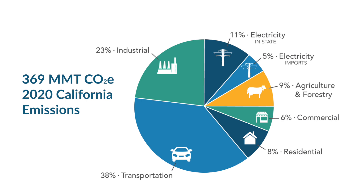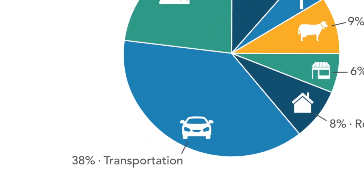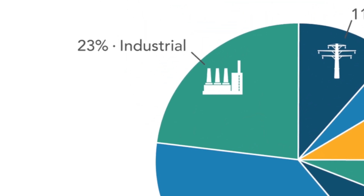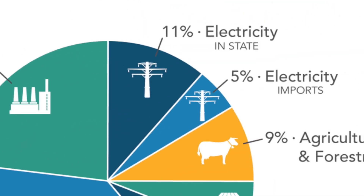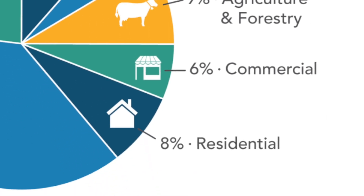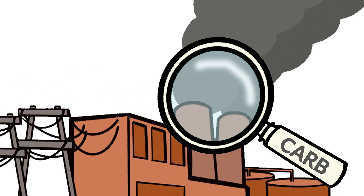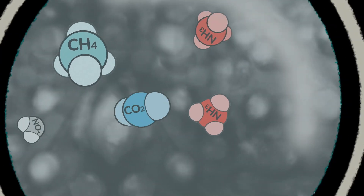CARB's California Greenhouse Gas Emissions Inventory accounts for human-made emissions from all major sectors, including transportation, industry, electricity generation, agriculture, landfills, and residential and commercial buildings. The inventory follows an internationally accepted method for building greenhouse gas emissions inventories.